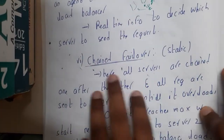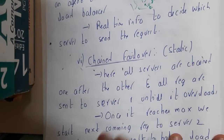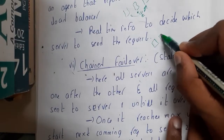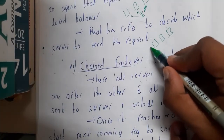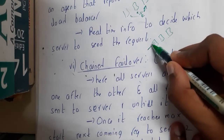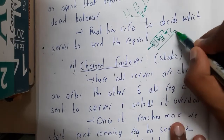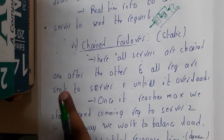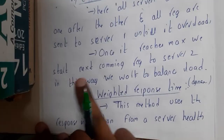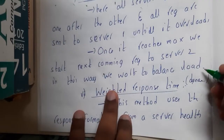Similarly, chained failover is a static method. Here, if you have three servers, you assign all requests to the first server only until it is full. Once it cannot handle any more requests, you send them to the second server, filling servers one after the other. All requests are sent to server one until it is overloaded, then the next coming requests are sent to server two. This is how load is controlled in chained failover.